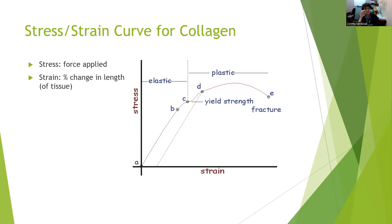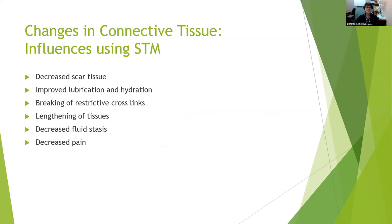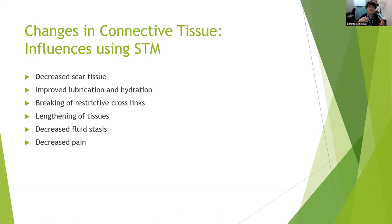The stress is the force applied, the strain is the change in tissue length — by applying force, we're trying to affect change in tissue length. The changes we can influence in connective tissue using soft tissue mobilization include: decreasing scar tissue by stimulating appropriate remodeling, improved lubrication and hydration of the ground substance, breaking of restrictive cross-links, lengthening of tissues by stretching into the plastic phase, decreasing fluid stasis by moving fluid out of the area, and decreasing pain as a result of all those different effects. Soft tissue mobilization can have a nice effect — it's not going to completely resolve the issue, but it contributes to the healing process.